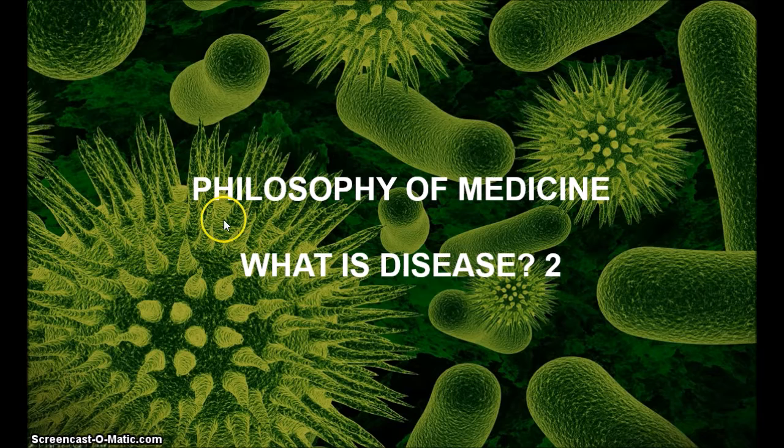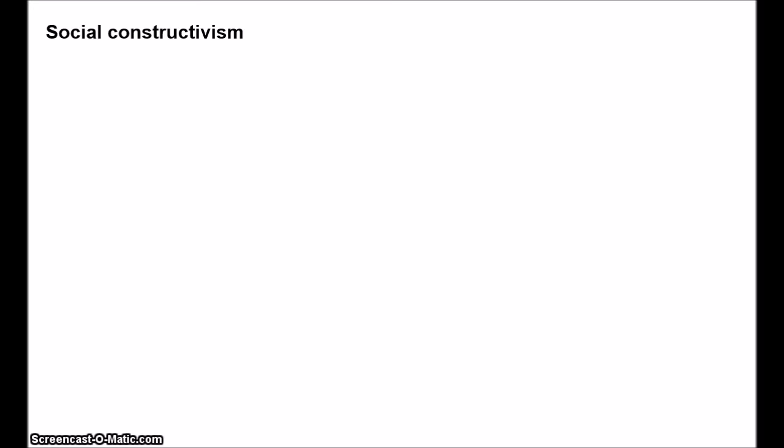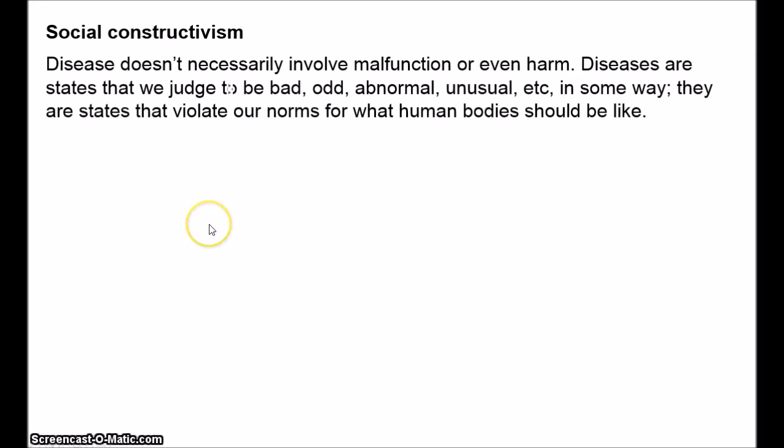Today we're going to look at a rather more extreme value-laden approach: social constructivism. It's notoriously difficult to give a precise characterisation of social constructivism, but the basic idea is that it's up to us—it's up to society—whether or not something counts as disease. Something is a disease if we choose to class it as a disease. In particular, a disease doesn't necessarily involve malfunction or even harm. Diseases are states that we judge to be bad or unusual or abnormal in some way—states that violate our conventions about what humans should be like.